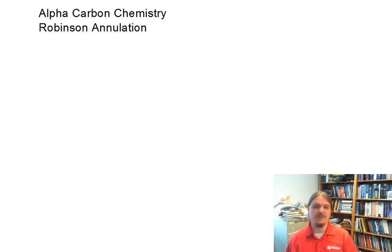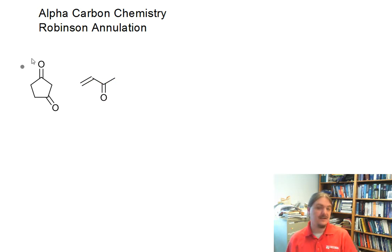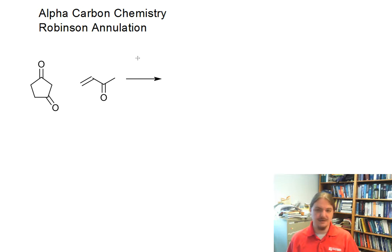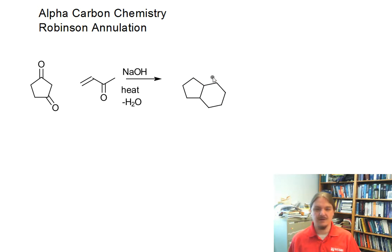Hello. In this video, I'm going to talk about the Robinson annulation. The Robinson annulation is a reaction of a dicarbonyl compound — and often it's cyclic, but it doesn't have to be — and a certain type of alpha-beta unsaturated ketone, and there needs to be some alpha-hydrogens on the other side of this ketone. It's called an annulation because a new ring is formed on the compound.